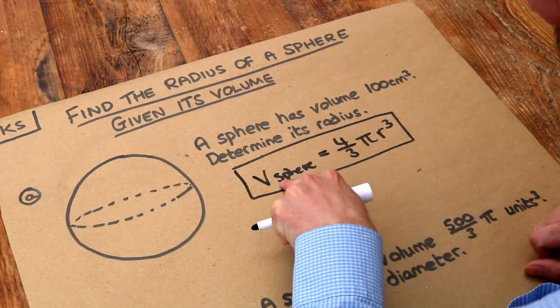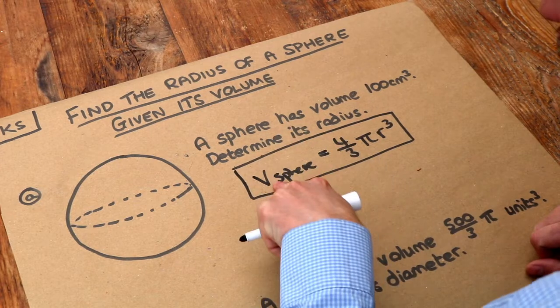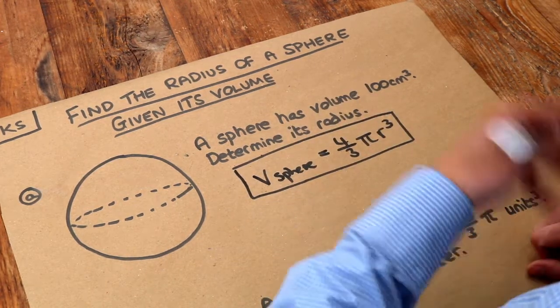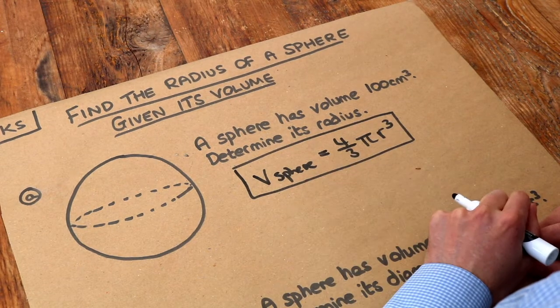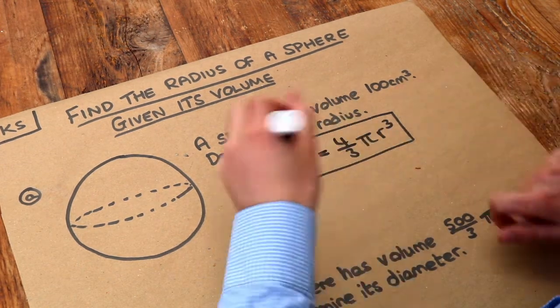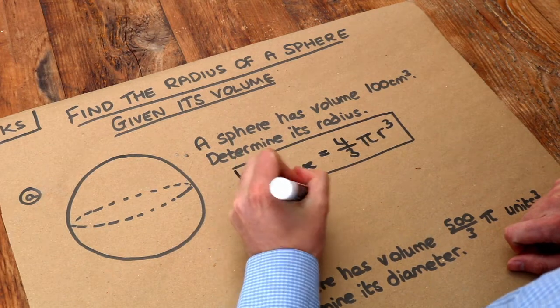Now before we had a radius and we worked out the volume. This time we have the volume and we want to work out the radius. But we use exactly the same method. We still just substitute into this formula. Now we're given the volume of the sphere, it's 100 centimeters cubed. So let's put the 100 there.